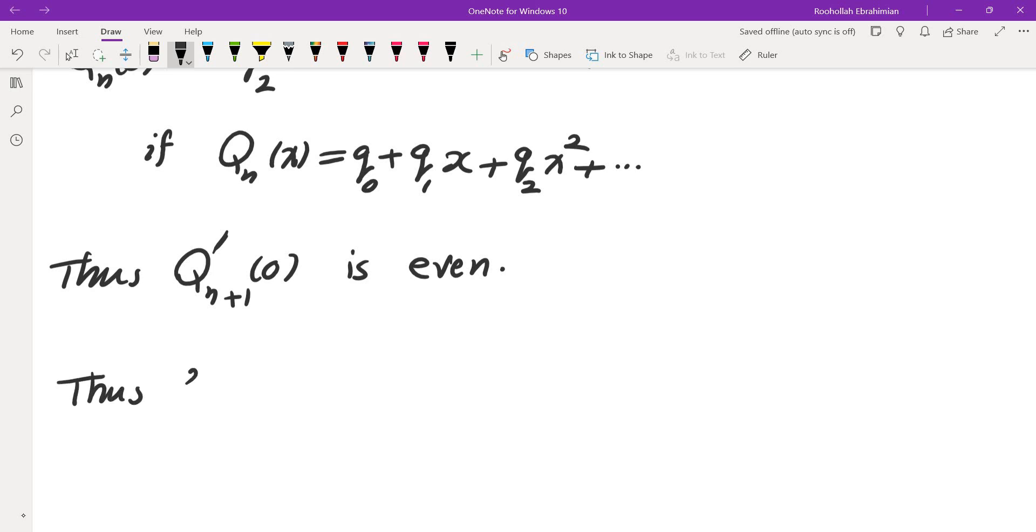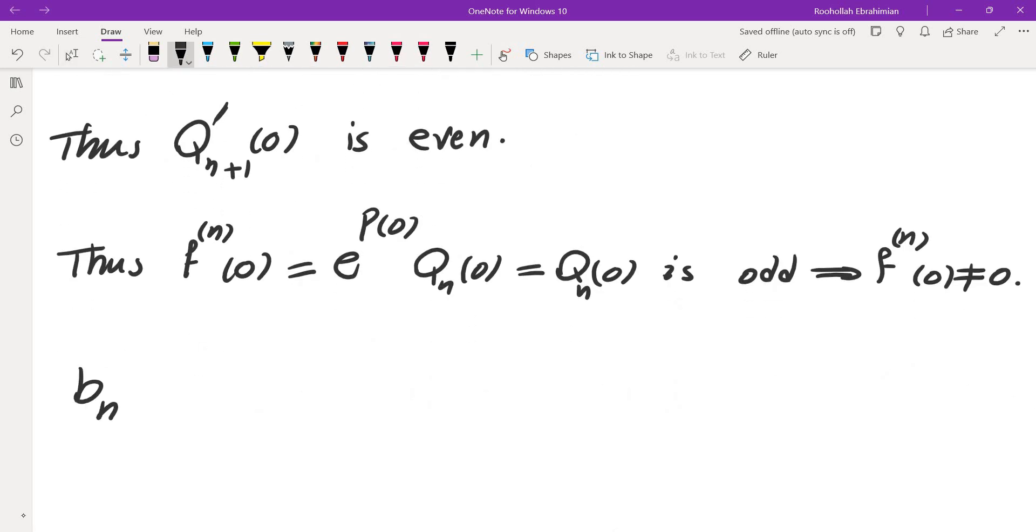Thus f^(n)(0) = e^(P(0)) Qₙ(0). P(0) is 0 so e^0 = 1, which is Qₙ(0), which is odd. And that means f^(n)(0) is not 0. Now if you look at bₙ, bₙ is f^(n)(0) over n factorial, so that's well known, and that is nonzero. And that's exactly what we wanted to prove.